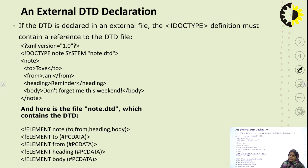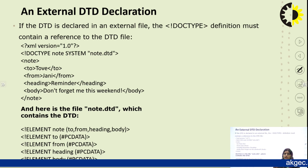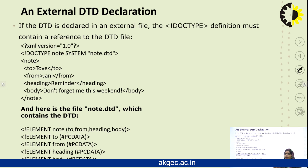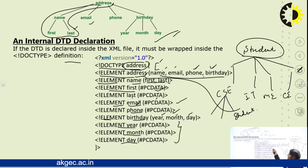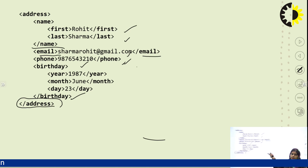Now, what is external DTD declaration? In internal DTD, the DTD and XML parts are together in one file. In external DTD, the DTD is declared in a separate external file — not inside the XML document. When the DTD is declared externally, it is considered an external DTD declaration.